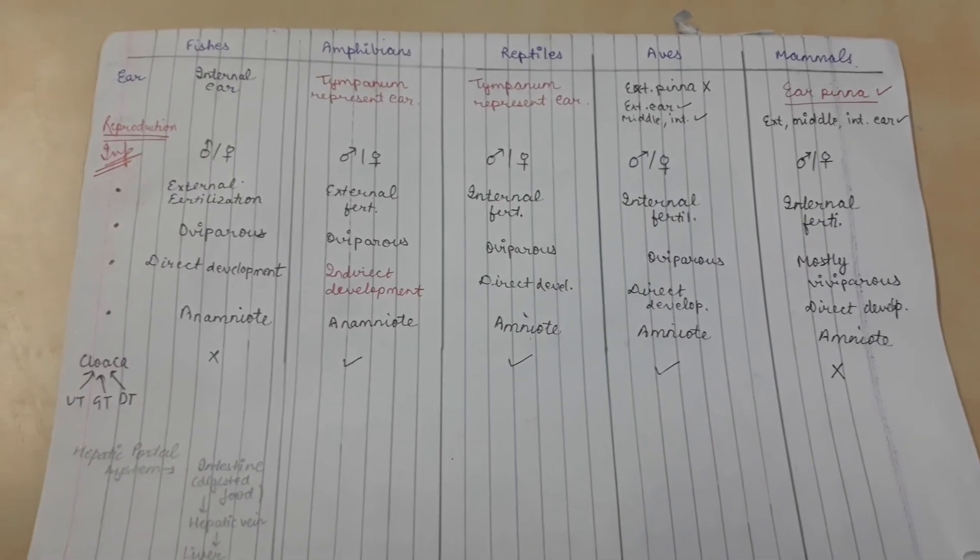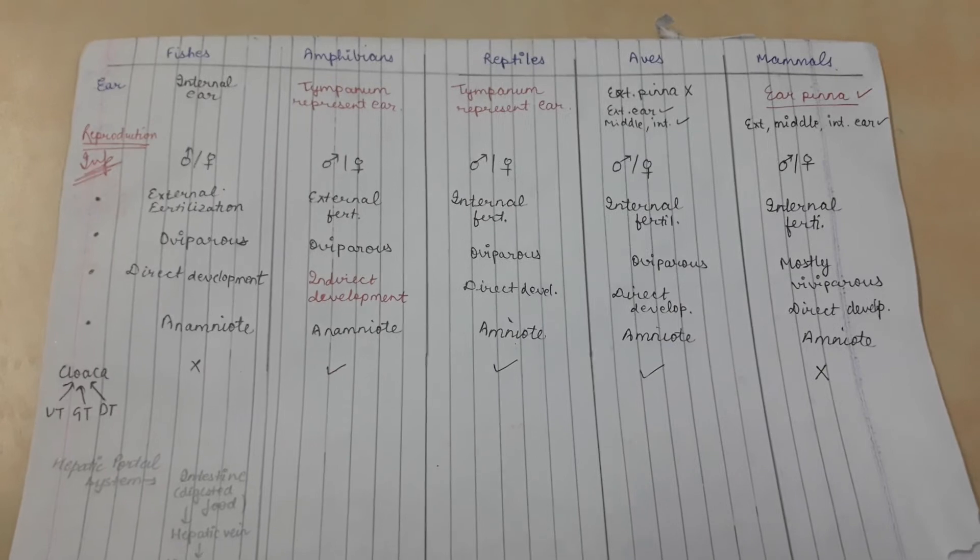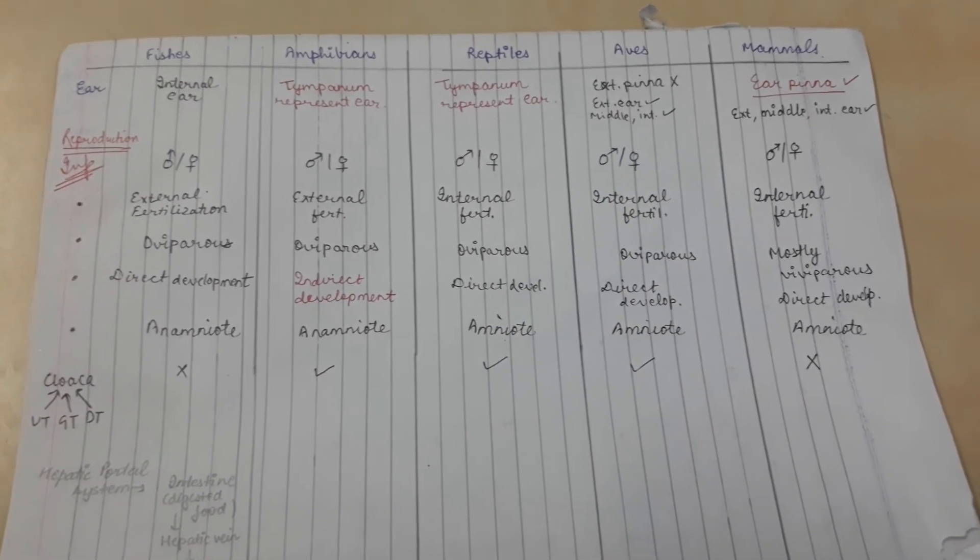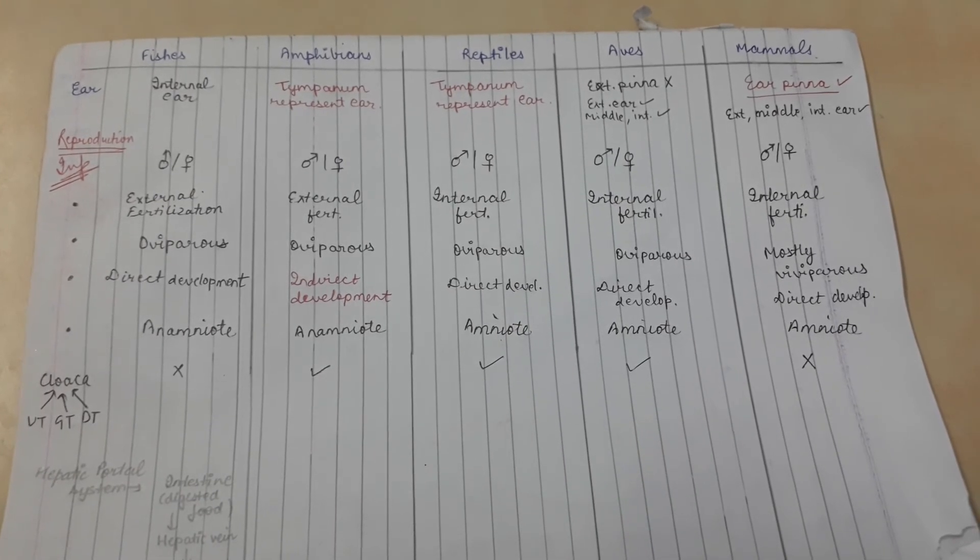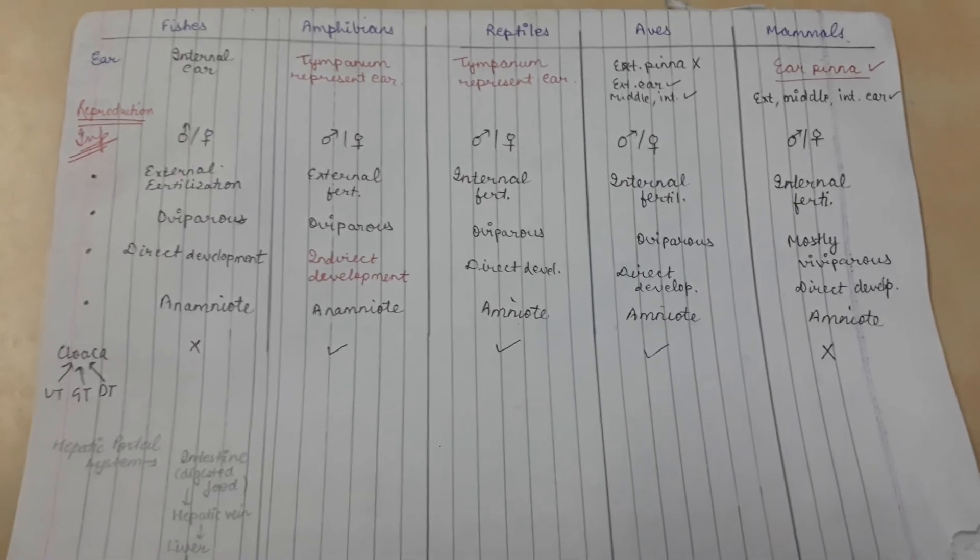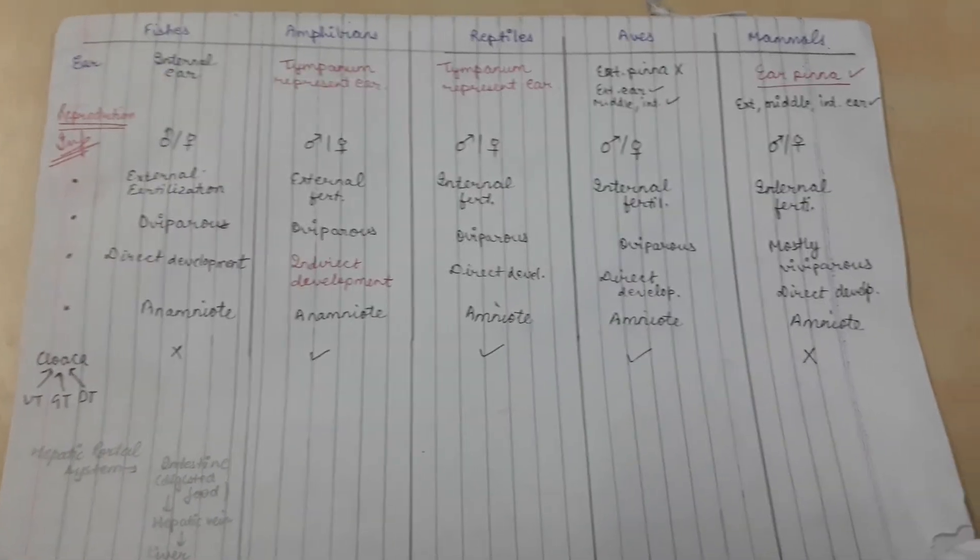About amniotes and cloaca: cloaca is a common opening of the digestive system, genital system, and urinary system. Only fishes and mammals do not have cloaca. The rest of them do have cloaca.